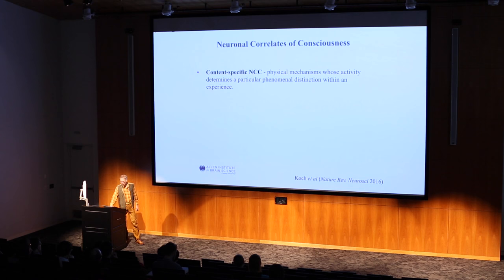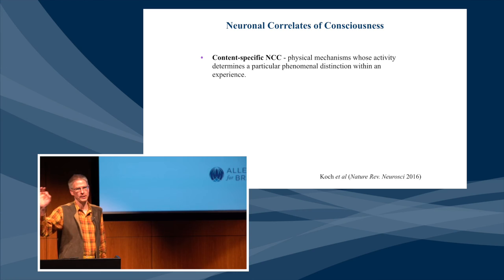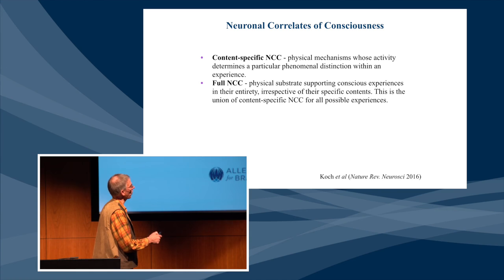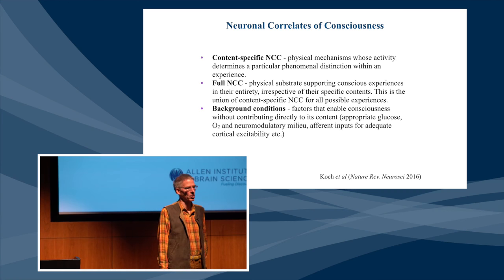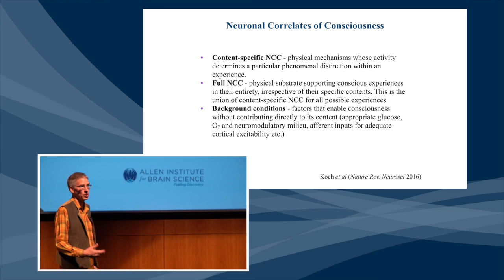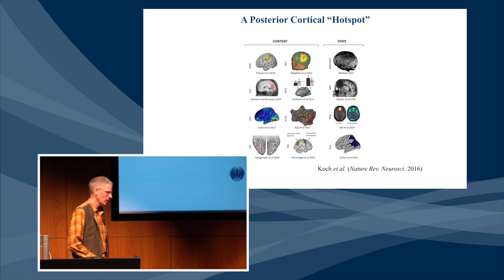Summarizing this approach: the content-specific neural correlate of consciousness is the physical mechanism whose activity underlies a particular phenomenal distinction within an experience — seeing a face versus not seeing a face, or seeing a house versus a face. This has to be distinguished from the full NCC, which can be thought of as the union of all possible content-specific NCCs for all possible experiences. This must also be distinguished conceptually from background conditions — things that have to obtain for you to be conscious of anything at all: your heart has to pump, there has to be glucose, appropriate neuromodulatory factors, afferent inputs for adequate cortical arousal. If those are not present you won't be conscious of anything, but those things do not directly contribute to any one specific content.